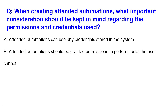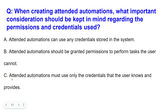Another option says attended automation should be granted permission to perform tasks the user cannot — for example, elevating to admin access the user doesn't have. But that is not allowed. Attended automation must use only the credentials that the user knows and provides. You should design the automation so the user can enter their credentials, perhaps with a bot delay, but you must not use any credential apart from your own.